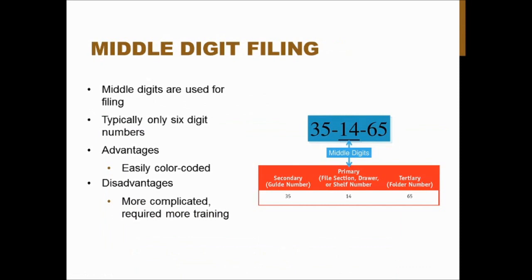Middle digit filing is very similar. Instead, you file by the middle two digits. If the middle digits are the same for two numbers, you look at the first two digits next, and if those are also the same, you refer to the last two digits. These systems are easily color-coded and allow for much greater patient confidentiality, because most laypersons would not know which filing system is being used, and it's a random set of digits rather than the patient's name.